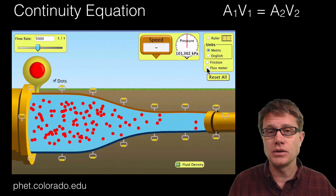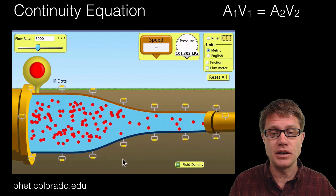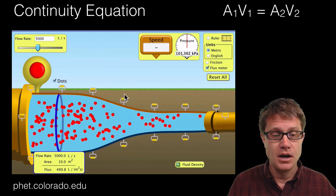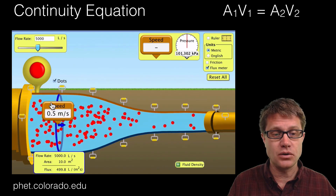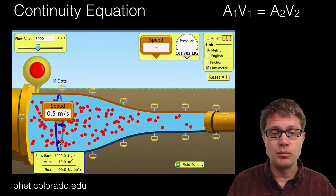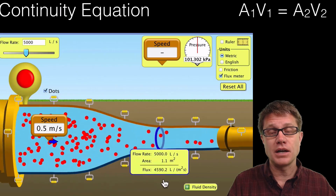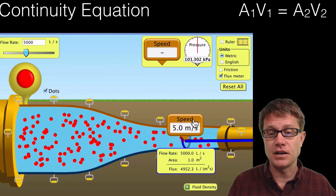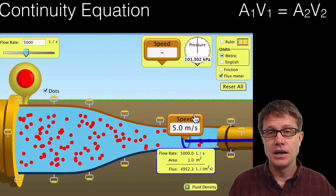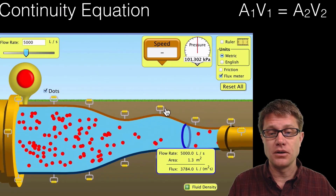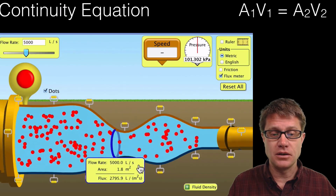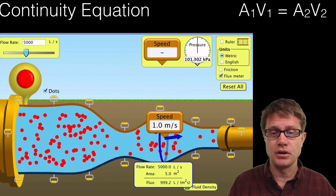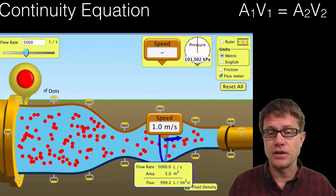Let's start with the continuity equation using a PHET simulation. You can see the fluid is moving faster on the right. On the left side the cross-sectional area is 10 meters squared and the speed is 0.5 meters per second — that is A1 times V1. Moving to the right, the cross-sectional area is 1 meter squared, giving a velocity of 5 meters per second. If we change the pipe so the cross-sectional area on the right is 5 meters squared, the speed becomes 1 meter per second. The continuity equation is very simple.